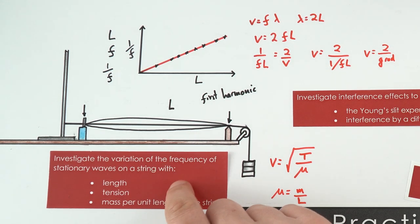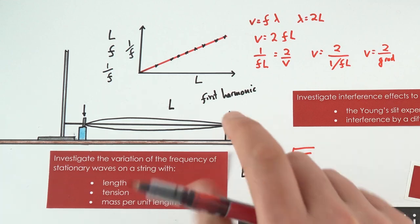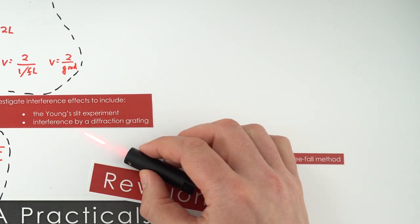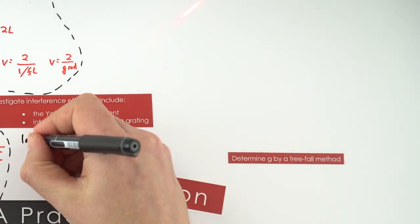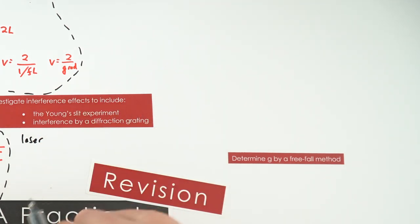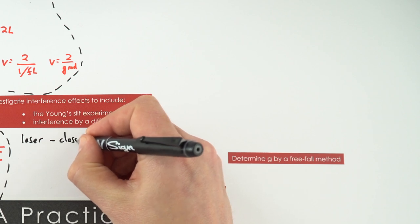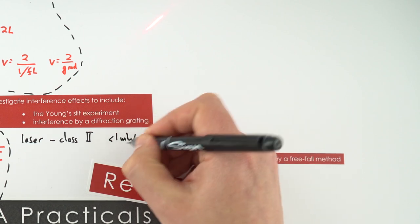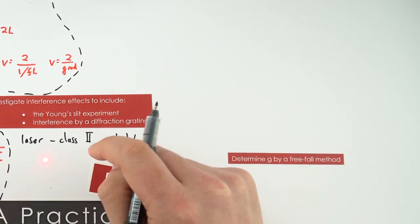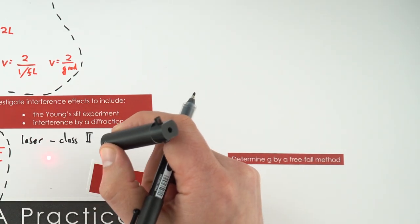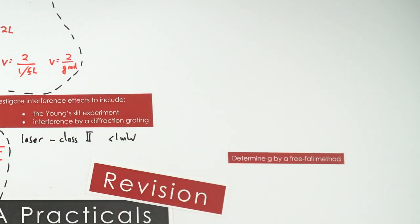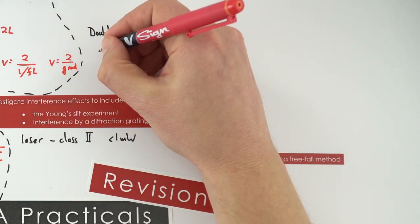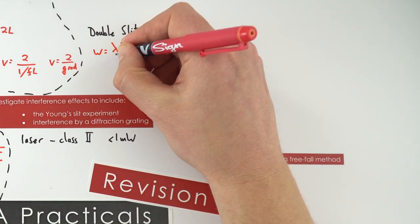That's a brief overview of stationary waves on a string. When it comes to interference effects, we often use lasers. The lasers used in school science are class two lasers, meaning they have a power less than one milliwatt. It's not much power, but it's concentrated into a very intense beam, so you must be careful. You'll often use a red laser, and occasionally a green or blue one. The first thing to consider is Young's slit experiment using a double slit, where W = λD/S.